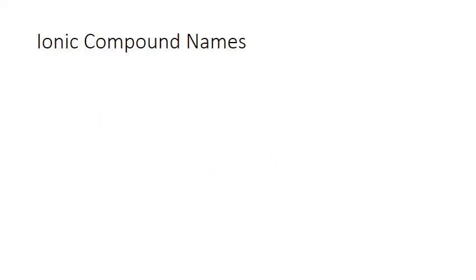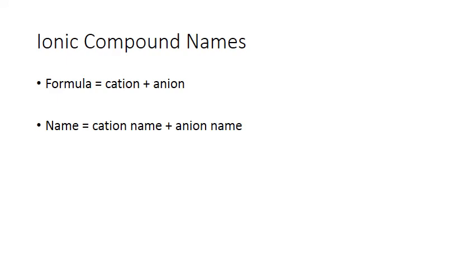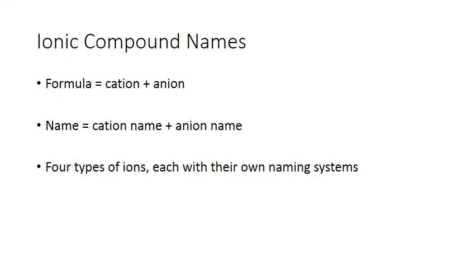We'll start with ionic compounds. Ionic compound formulas always follow the format of cation followed by anion, and the name of the compound mirrors that — it's always the name of the cation followed by the name of the anion. The trickiest part is that there are four different categories of ions, and each of those categories has their own naming system, so you have to figure out what type of ion you're dealing with and name it accordingly.